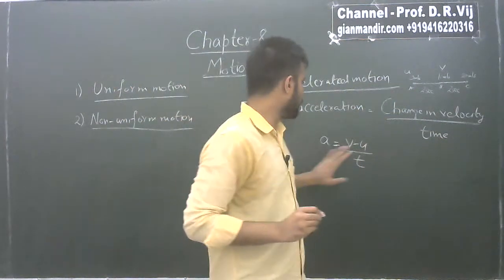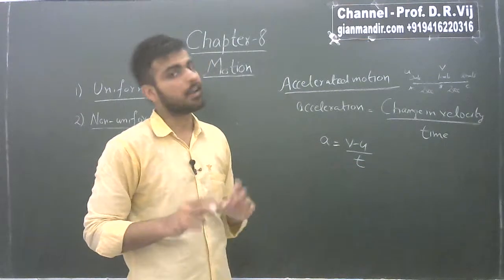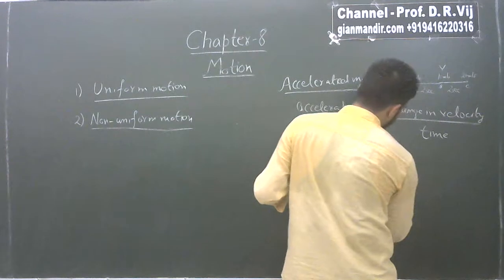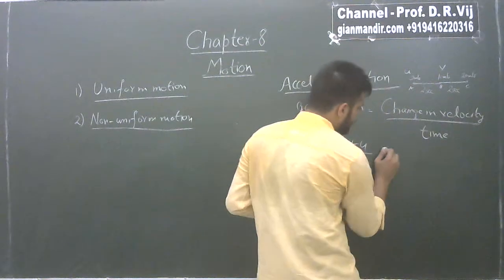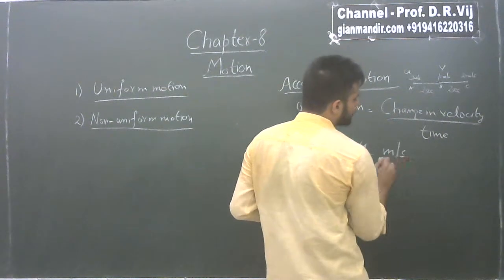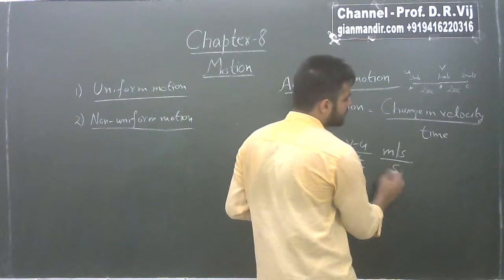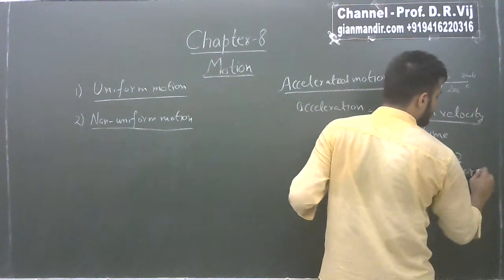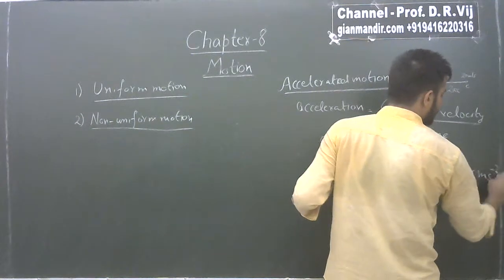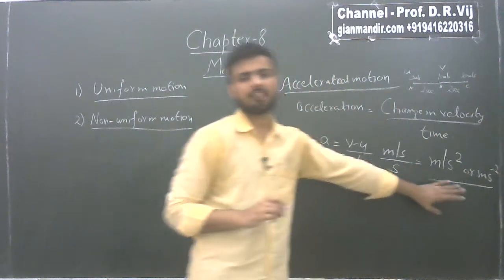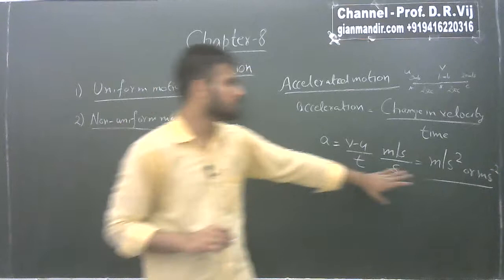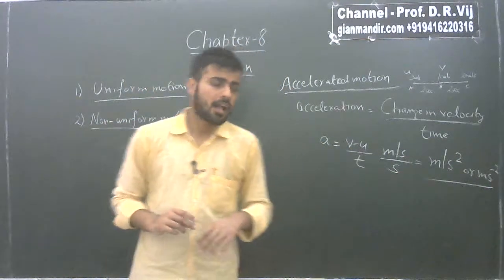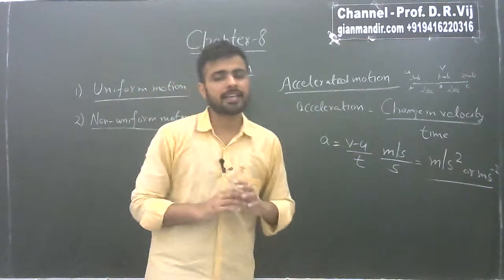What is the SI unit of acceleration? The velocity unit is meters per second and the time unit is second, so it comes out to be meters per second squared. This can also be written as m·s⁻². This is the SI unit of acceleration.